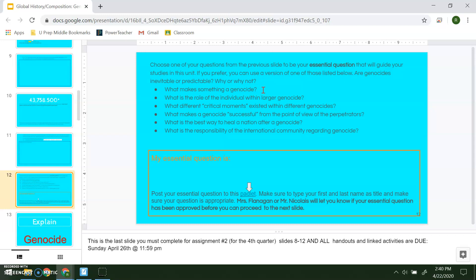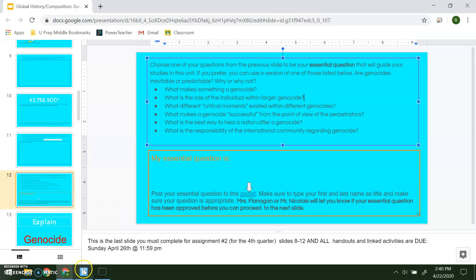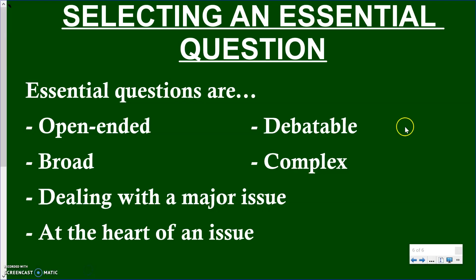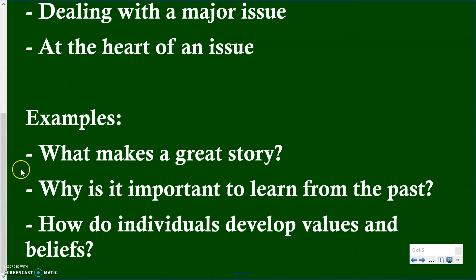'What makes something a genocide?' — that looks at the essential ideas behind an event being classified as a genocide; it's right at the heart of the issue. 'What is the role of an individual within a larger genocide?' — we're looking at the role of human beings at the center of that topic. Other examples: 'What makes a great story?' — maybe it's great characters, plot, or dialogue; the answer is debatable and goes to the heart of what makes a great story.